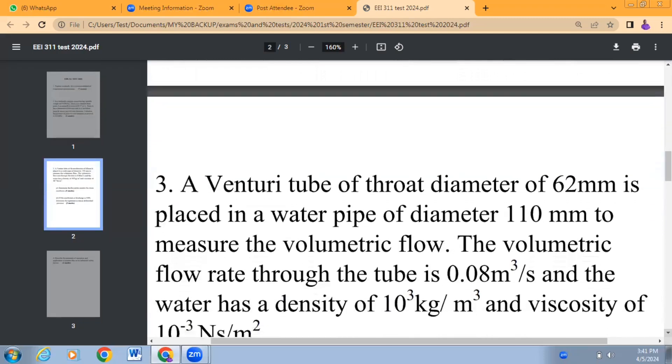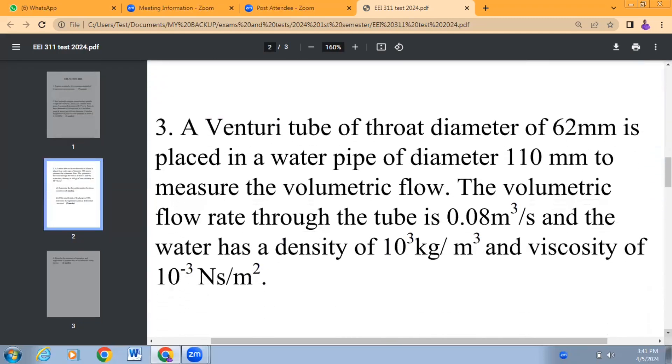The next question, question number three, has to do with a Venturi tube for measurement of differential pressure. A Venturi tube of throat diameter of 62 millimeters is placed in a water pipe of diameter 110 millimeters to measure the volumetric flow. The volumetric flow rate through the tube is 0.08 meter cube per second and the water has a density of 10 raised by 3 kilograms per meter cube and viscosity of 10 raised by minus 3 Newton seconds per meter squared.